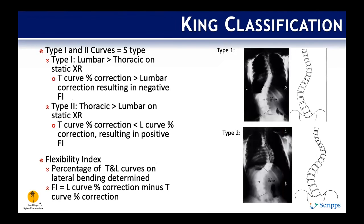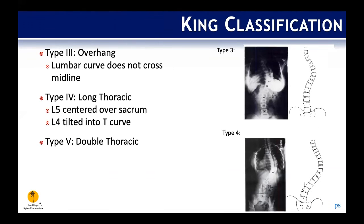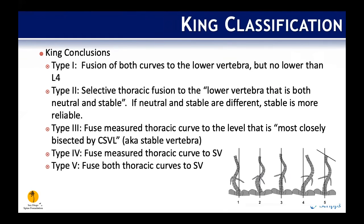Further examples from the paper show type one (lumbar greater than thoracic) versus type two (thoracic greater than lumbar) on static x-rays, with the flexibility index formula. Type three is described as an overhang where the lumbar curve does not cross the midline; type four is a long thoracic; and type five is a double thoracic curve. Recommendations: type one requires fusion of both curves; type two introduced the idea of selective thoracic fusion; and types three and five referenced the stable vertebrae most closely bisected by the central sacral vertical line.